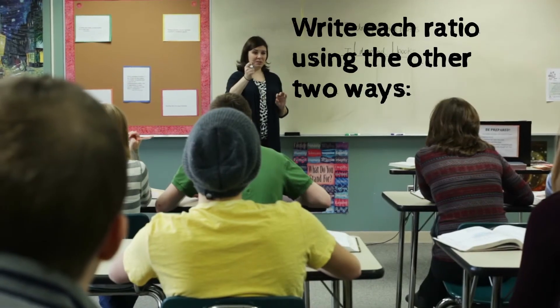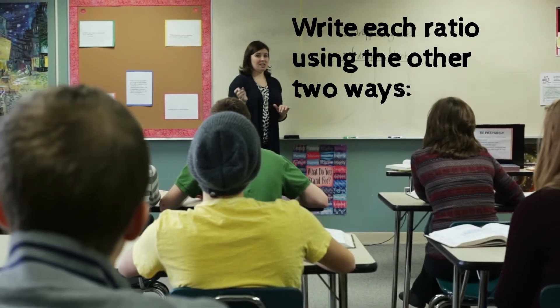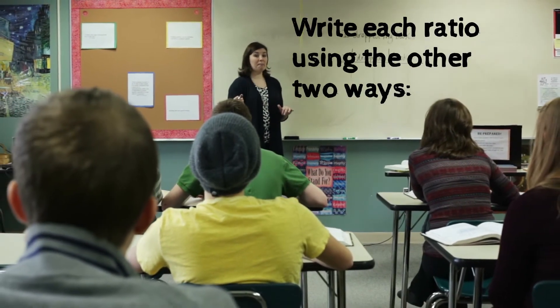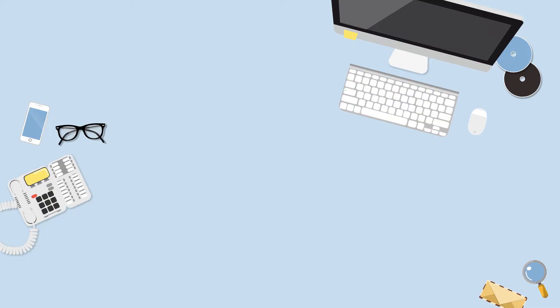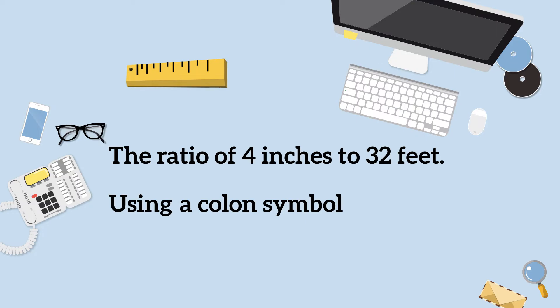Write each ratio using the other two ways. The ratio of 4 inches to 32 feet — it can be expressed two different ways.